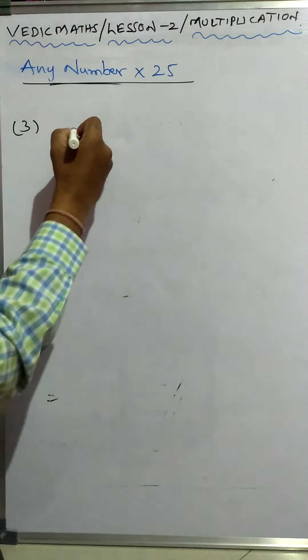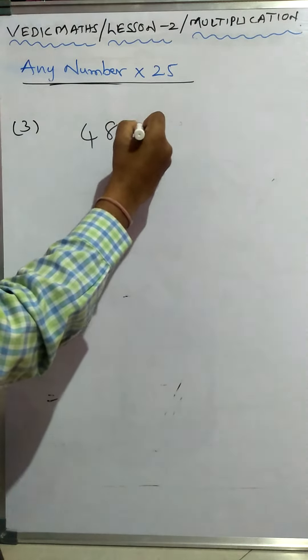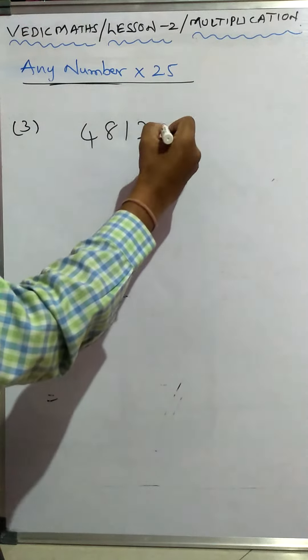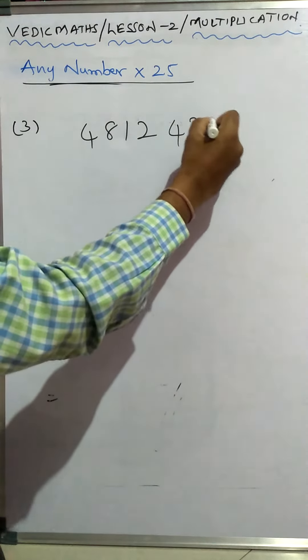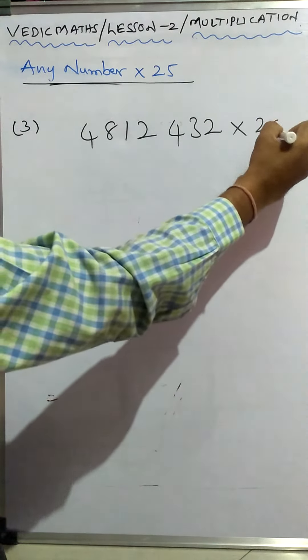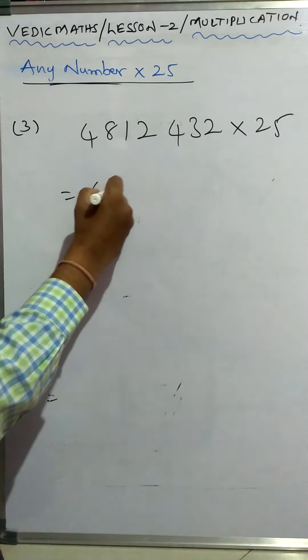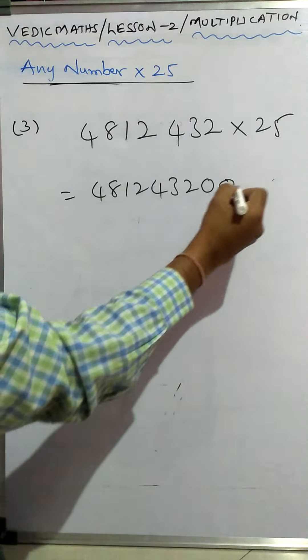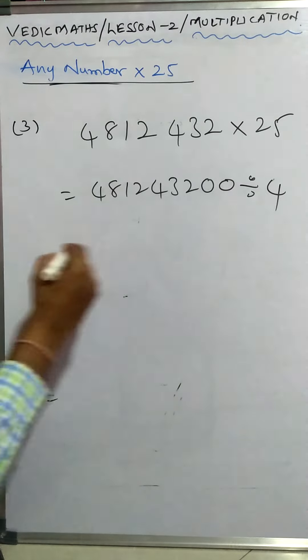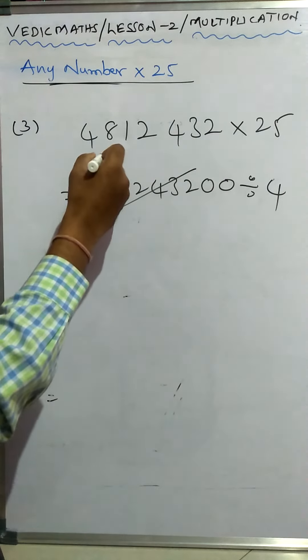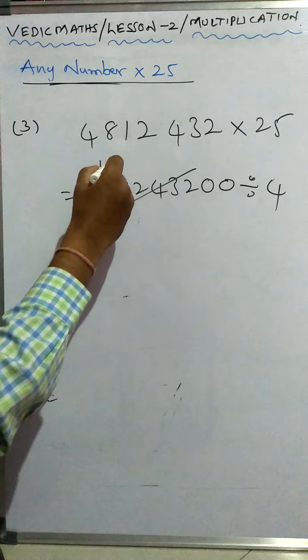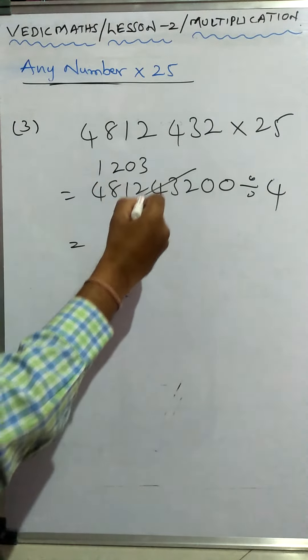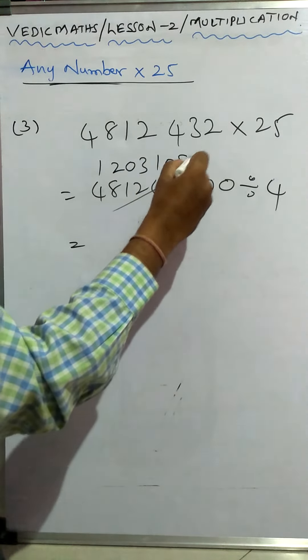Example three, you see 4812432 into 25. Double zero and divided by four. So it will become, you see, four one zero, four two zero, four three zero, four one zero, four eight three two double zero.